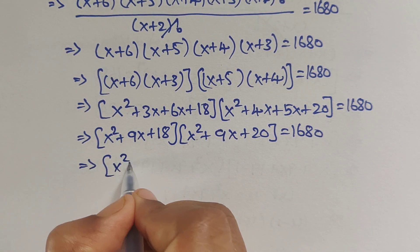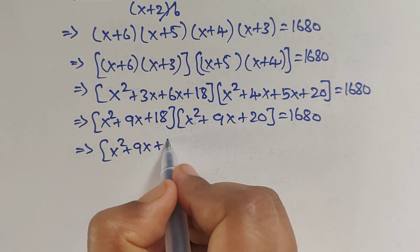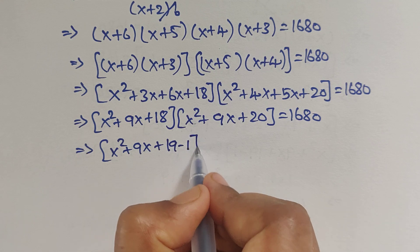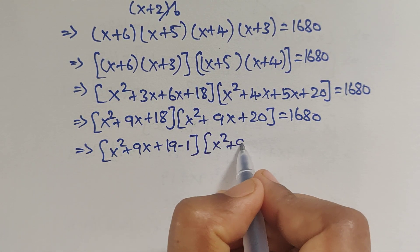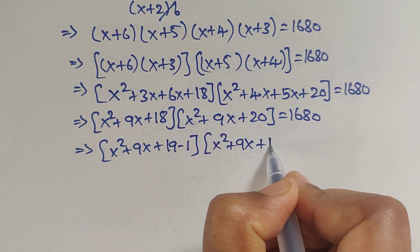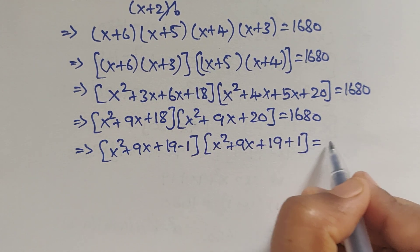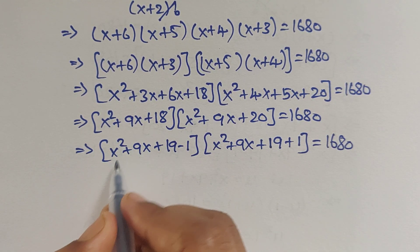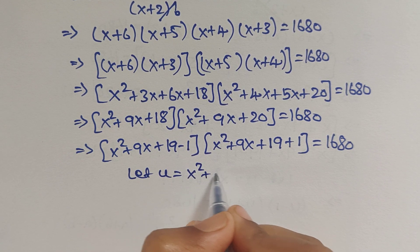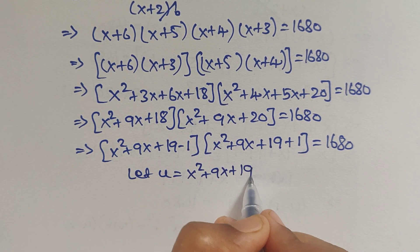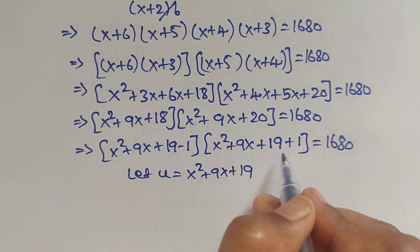We can rewrite 18 as 19 minus 1 and 20 as 19 plus 1. So let u = x²+9x+19. Then we have (u−1)(u+1) = 1680.